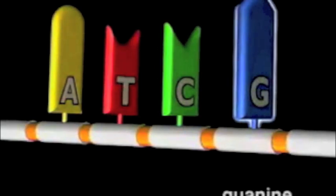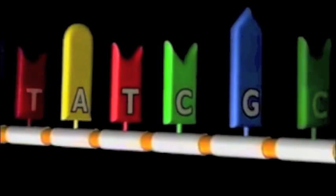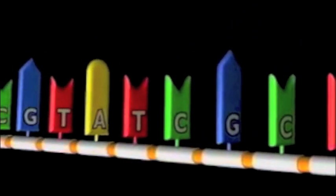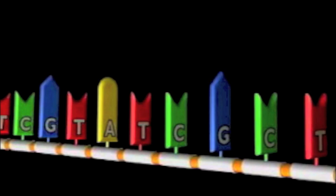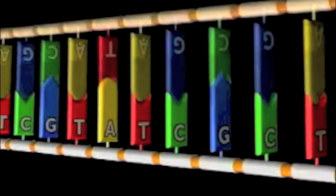The bases are always paired in the same way: adenine pairs with thymine and cytosine pairs with guanine. A always pairs with T, and C always pairs with G.